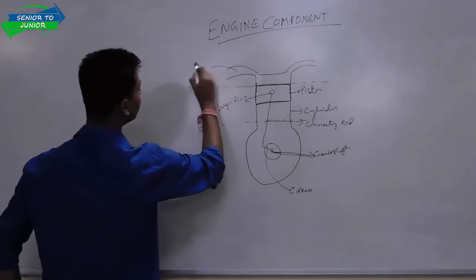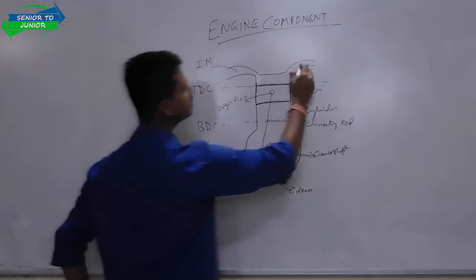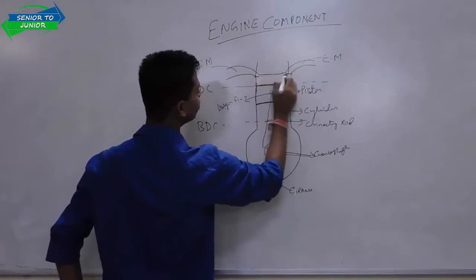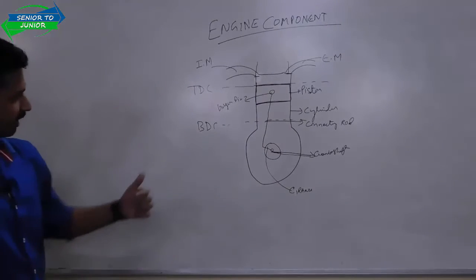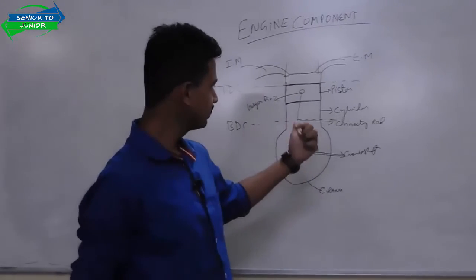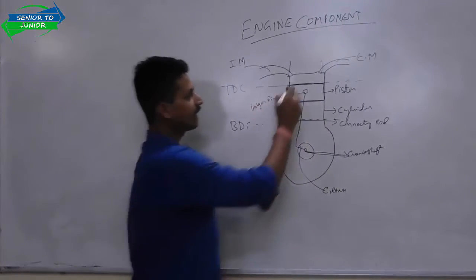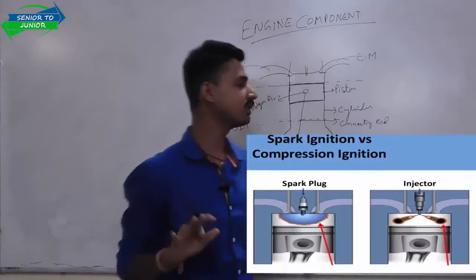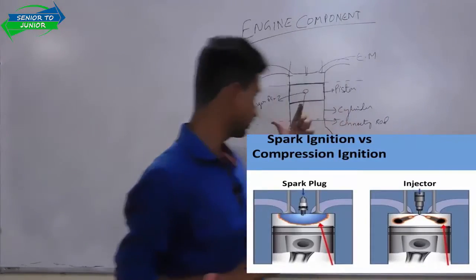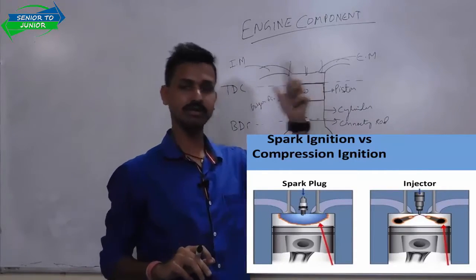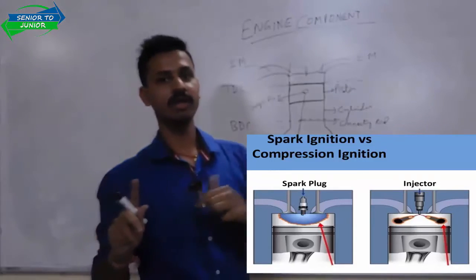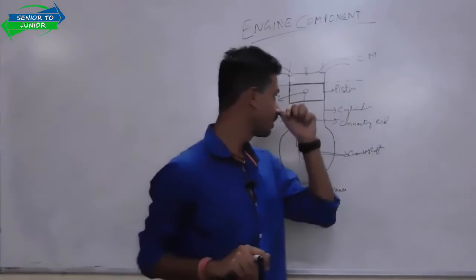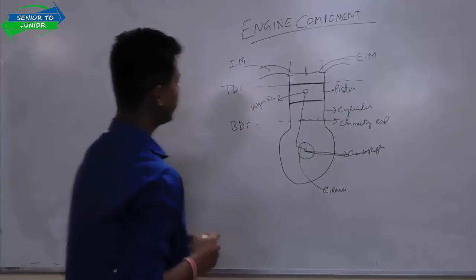This is called the inlet manifold and this is your exhaust manifold. There is your inlet valve and the exhaust valve. Now I am telling you the difference between petrol and diesel. If it is a petrol engine you will have a spark plug here, but if it is a diesel engine you will have an injector. In a petrol engine there is a spark plug and in a diesel engine there is an injector. When I teach the difference between diesel and petrol, I will explain why each is required.